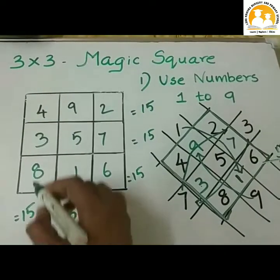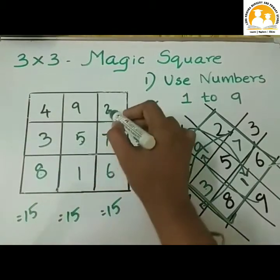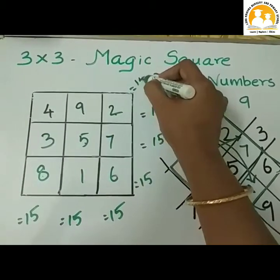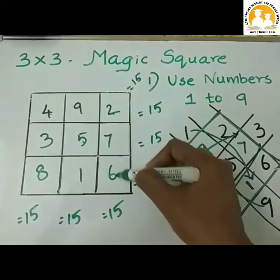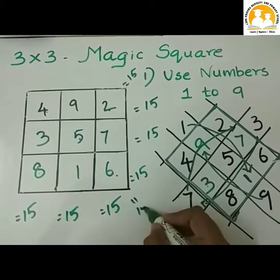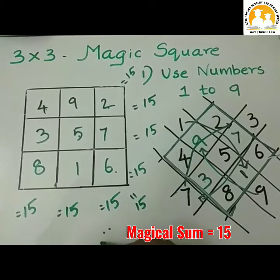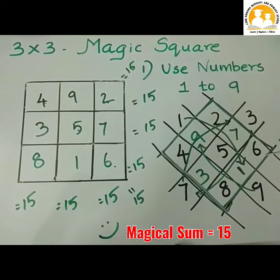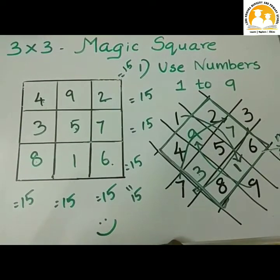Now the diagonal: 8 plus 5 plus 2 is equal to 15. In the other diagonal, 4 plus 5 plus 6 is equal to 15. The magical sum is 15, and the magic square is formed using numbers 1 to 9.